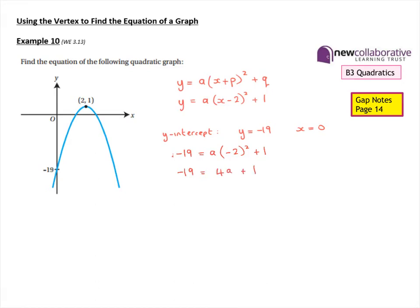We can solve that to find our value of a. We get 4a = -20, so a must be negative 5. Therefore the equation of this graph is y = -5(x - 2)² + 1.